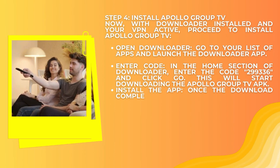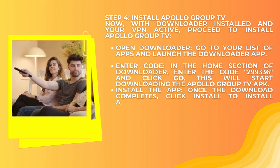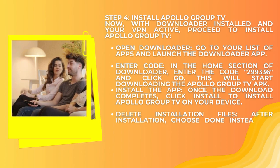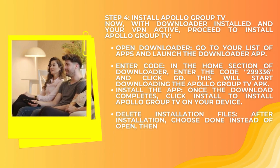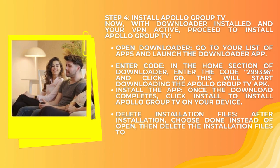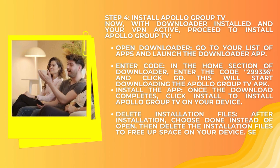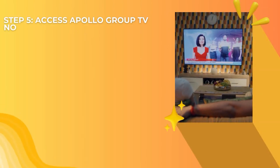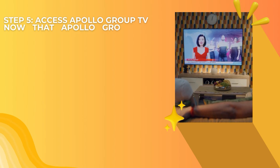Once the download completes, click Install to install Apollo Group TV on your device. After installation, choose Done instead of Open, then delete the installation files to free up space on your device. Select Delete and confirm by selecting Delete again.